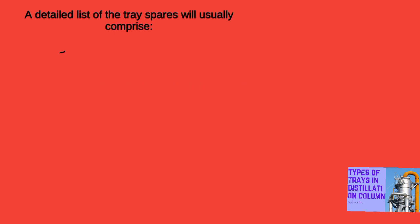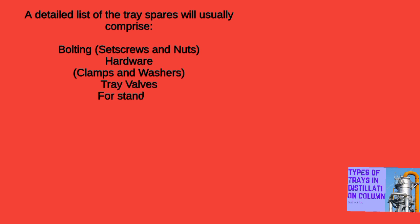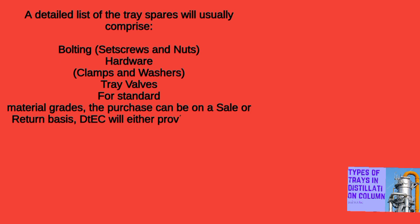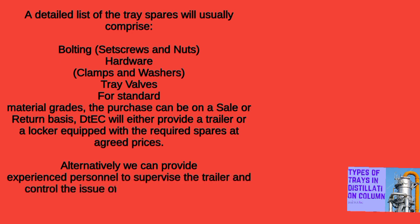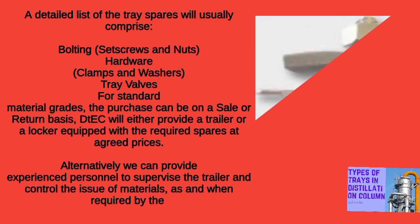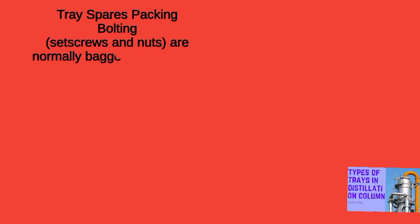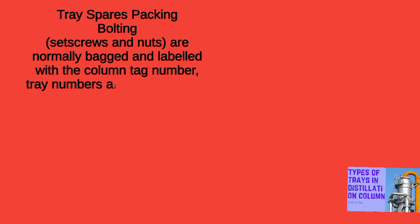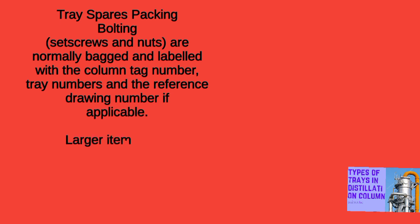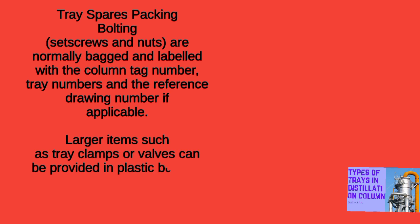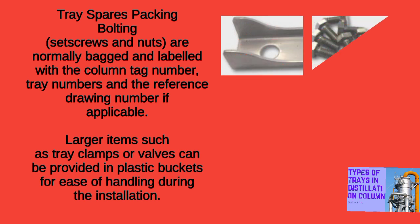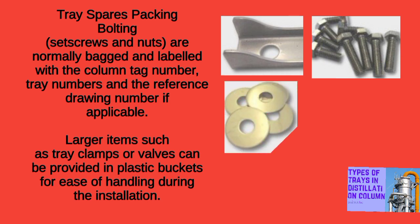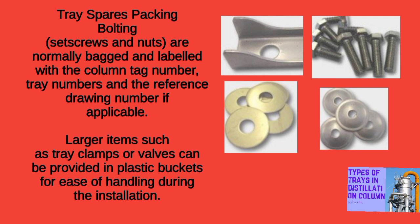A detailed list of tray spares will usually comprise bolting, set screws and nuts, hardware clamps and washers, and tray valves. For standard material grades, the purchase can be on a sale or return basis. DTEK will either provide a trailer or a locker equipped with the required spares at agreed prices. Alternatively, we can provide experienced personnel to supervise the trailer and control the issue of materials as and when required. Bolting, set screws and nuts are normally bagged and labeled with the column tag number, tray numbers, and the reference drawing number if applicable. Larger items such as tray clamps or valves can be provided in plastic buckets for ease of handling during installation.